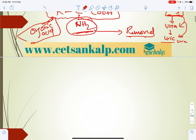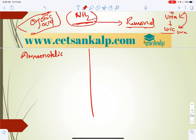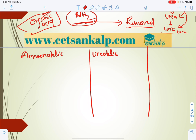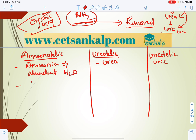Animals are categorized into ammonotelic, ureotelic, and uricotelic based on the nitrogenous waste they excrete. Ammonotelic animals eliminate ammonia. To excrete ammonia, abundant water is required because ammonia is highly toxic and must be diluted. Highly toxic material must be converted to less toxic form or eliminated quickly.